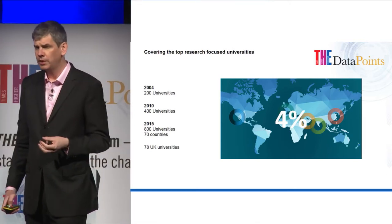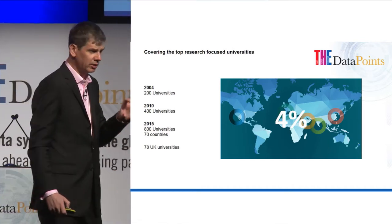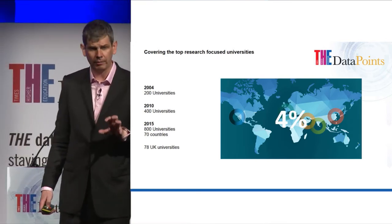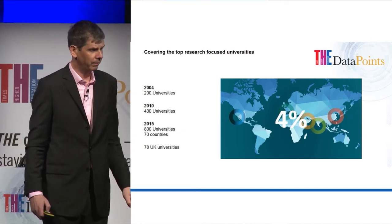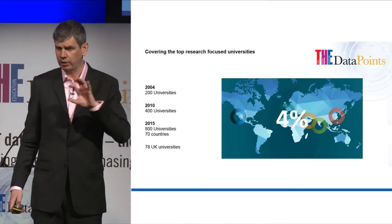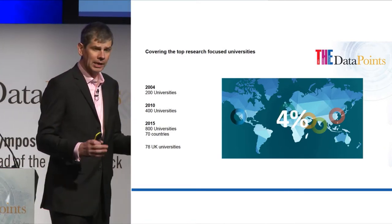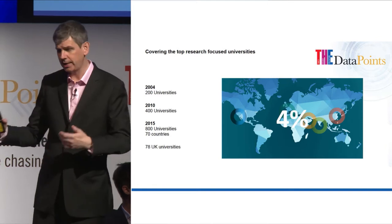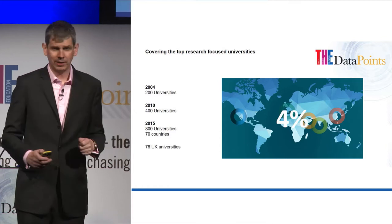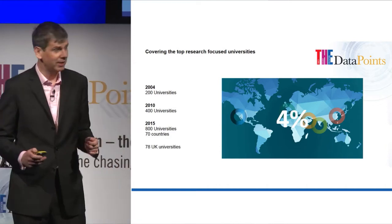Out of the 21,000-odd universities, we rank about 800 — actually 801, due to a tie for 600th place last year. This represents only four percent of all the universities in the world. It's not to say that if you're not on the list you aren't a great university. If your mission is primarily teaching, you could be a brilliant teaching university but will not necessarily appear in our ranking. The number of universities covered has grown significantly since the first ranking in 2004, when we listed 200 universities, dominated by the United States and the United Kingdom.